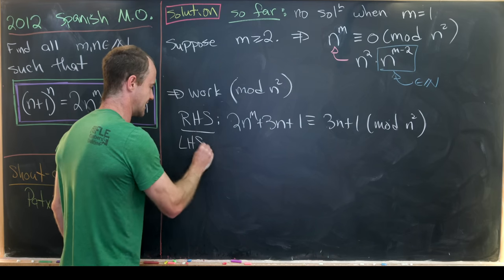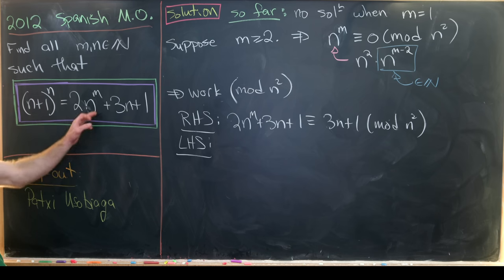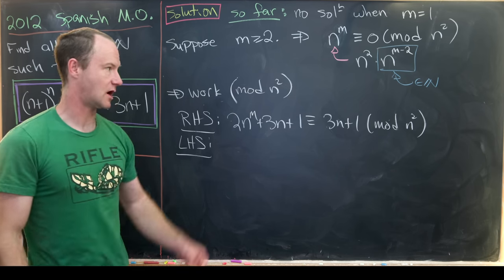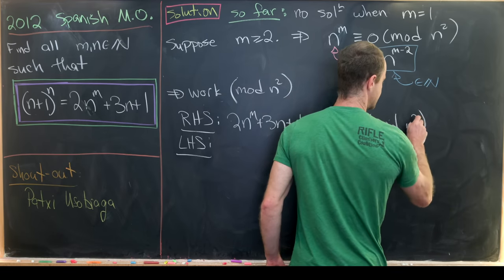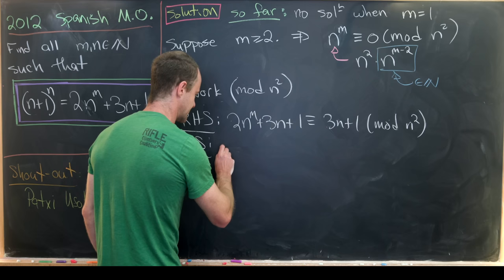Now, let's look at the left-hand side. Obviously, if we want the right-hand side to be equal to the left-hand side, then they have to be congruent mod n^2. But we're just like reducing them independently of each other.